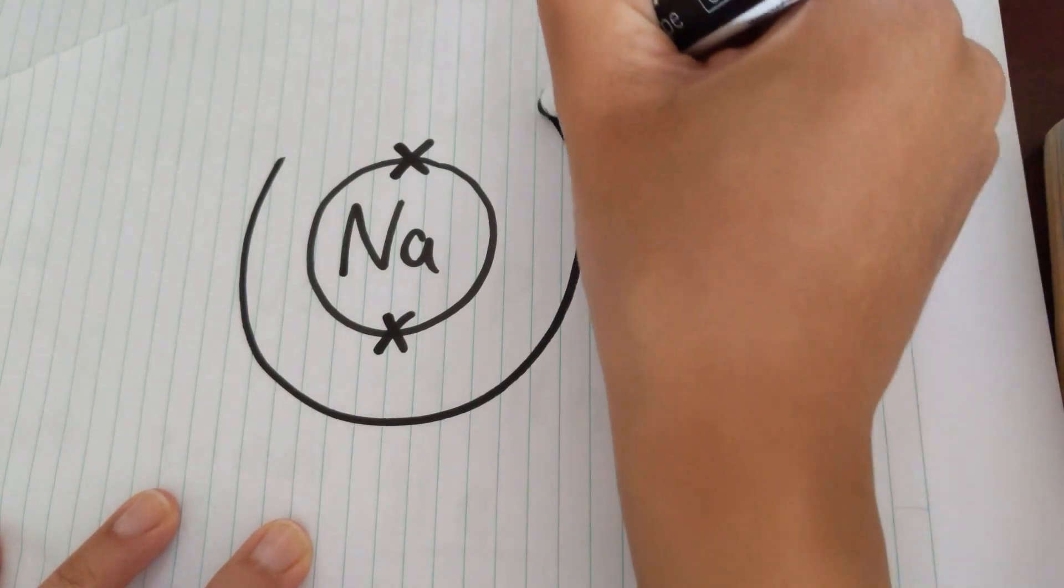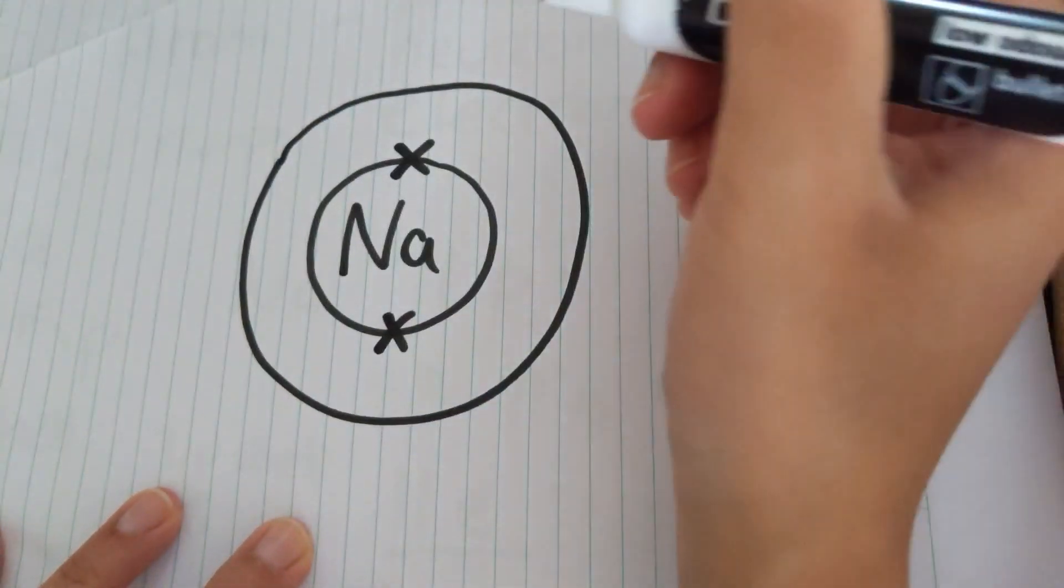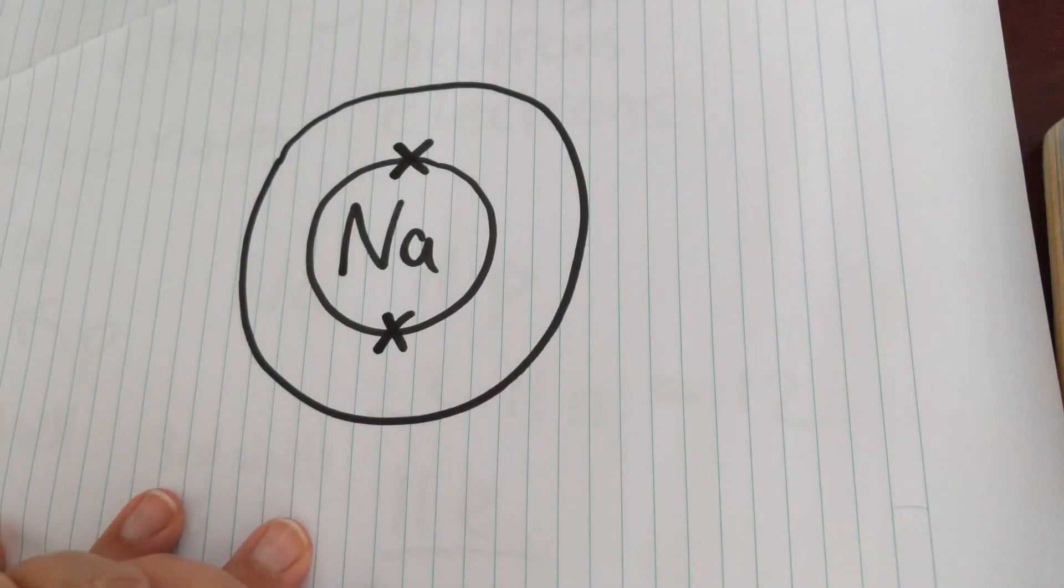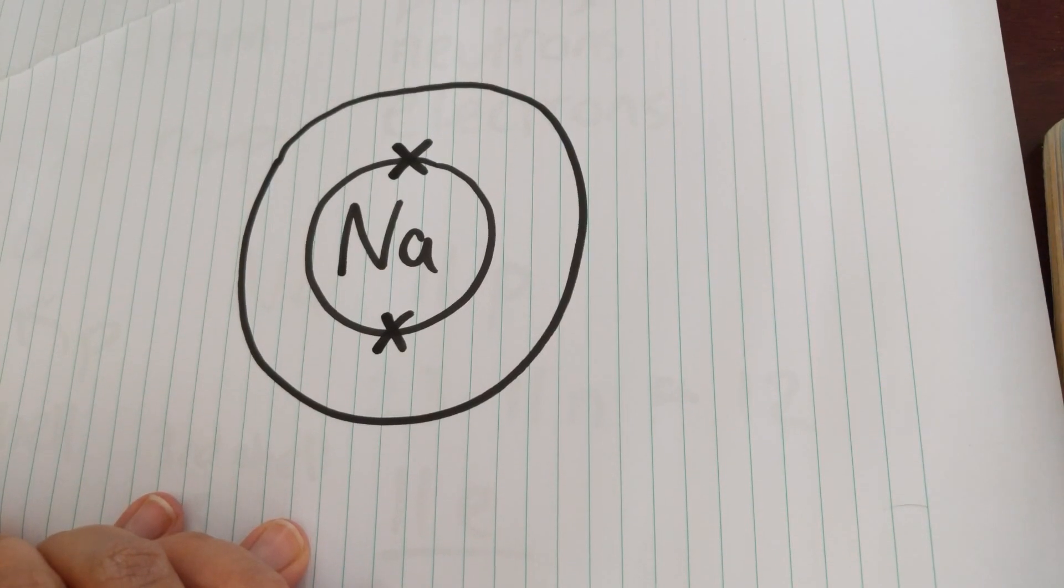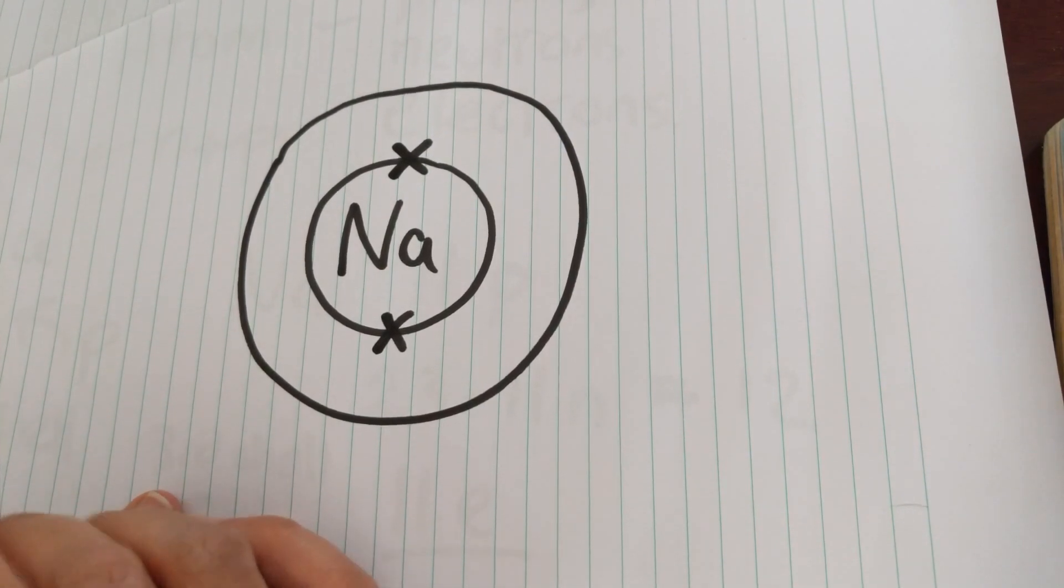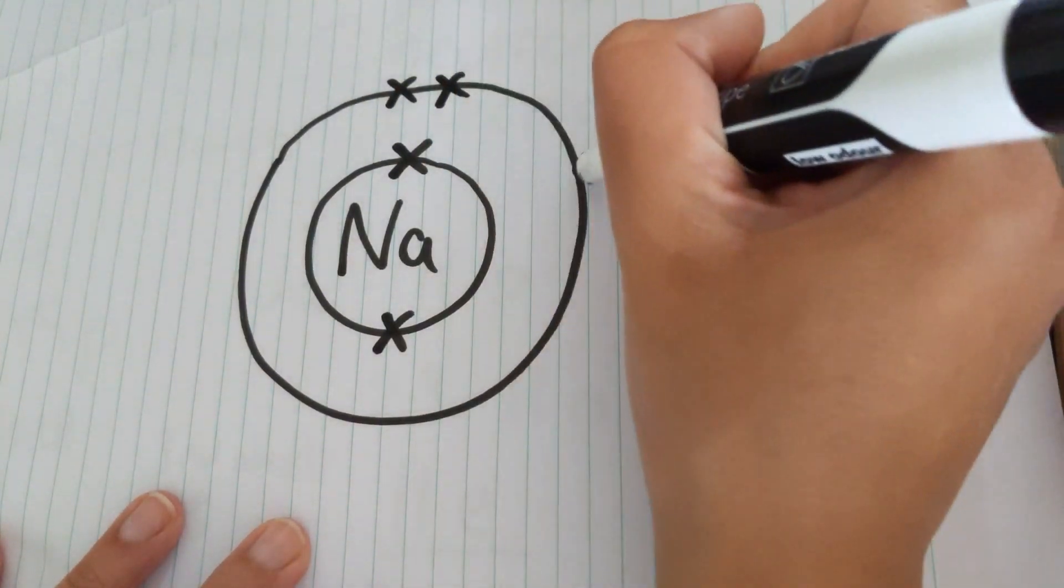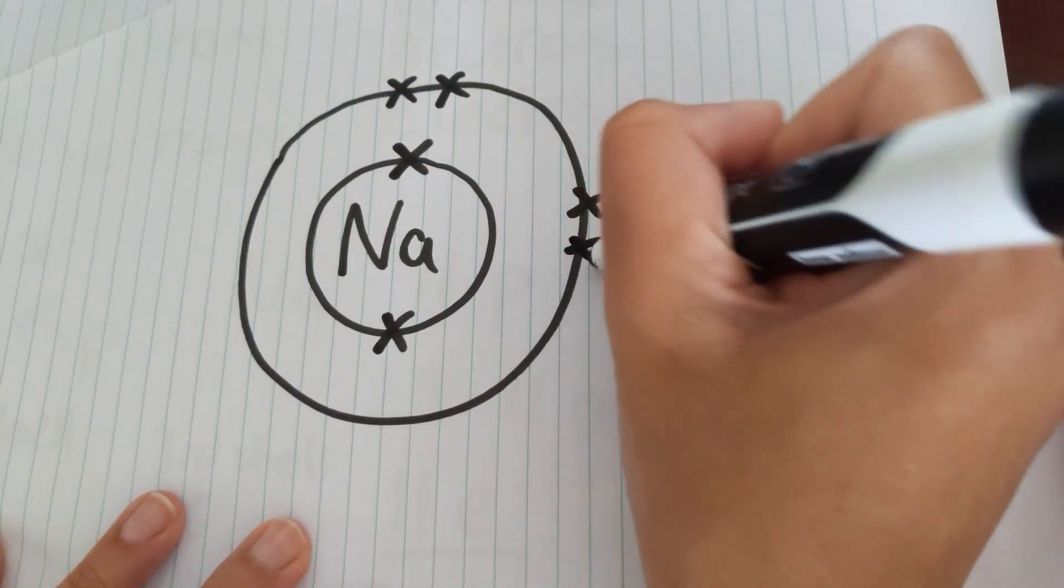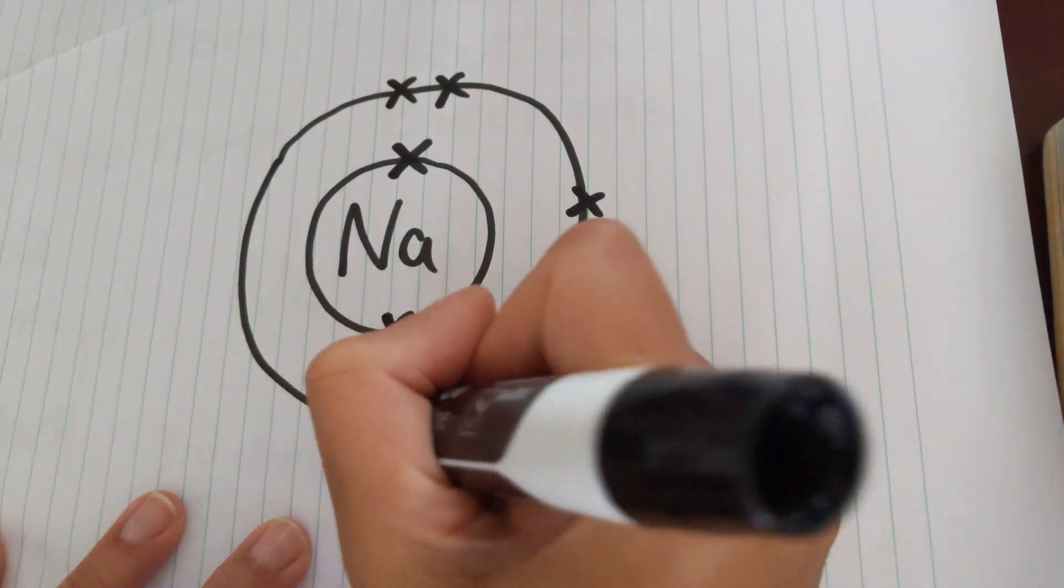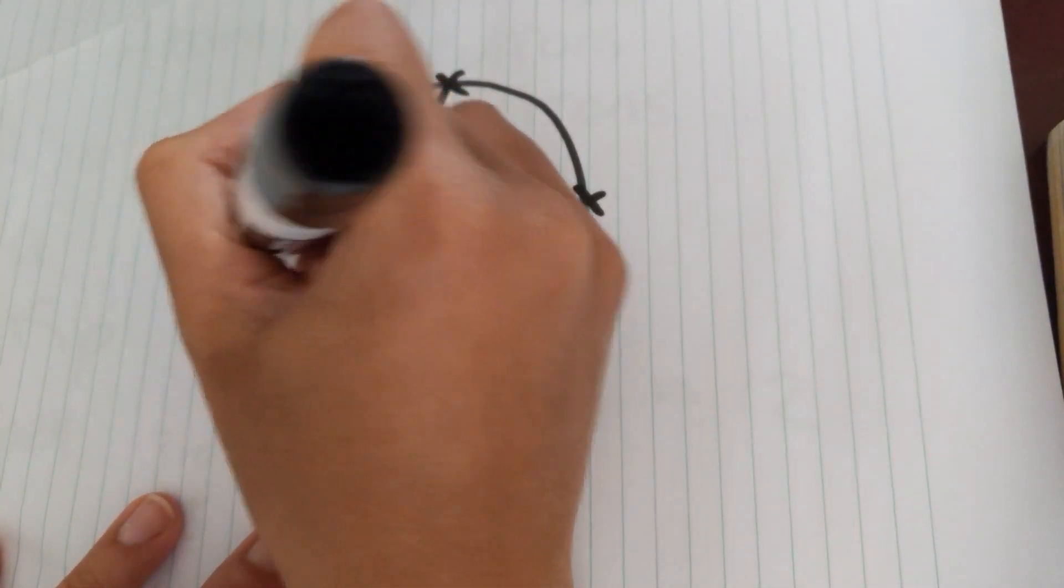Second shell, which is bigger or energy level, you can call it as well, can have a maximum of eight. So two plus eight is 10. So that's less than 11. So we can just fill those in. One, two, three, four, five, six, seven, eight.